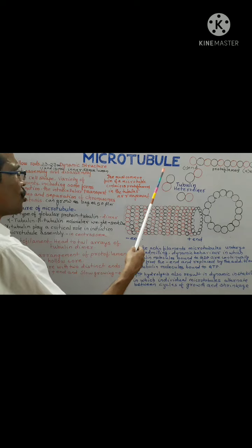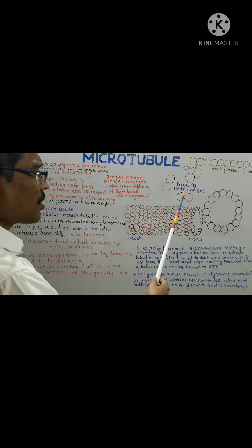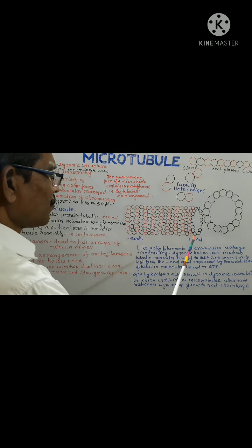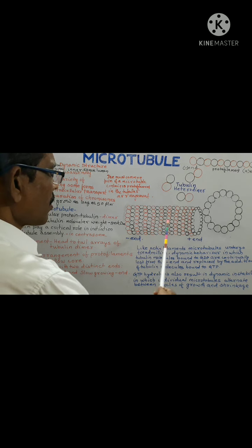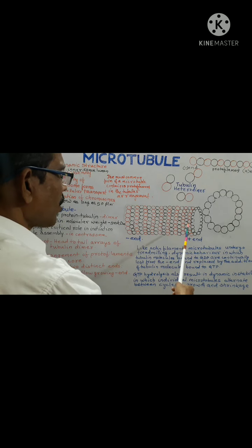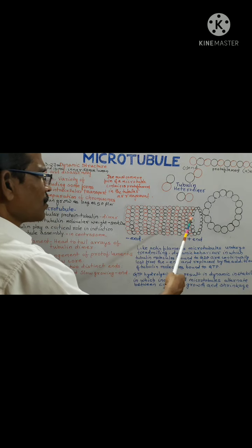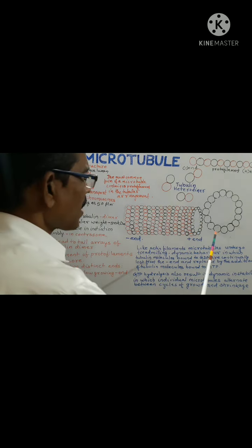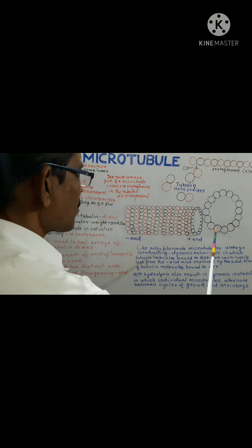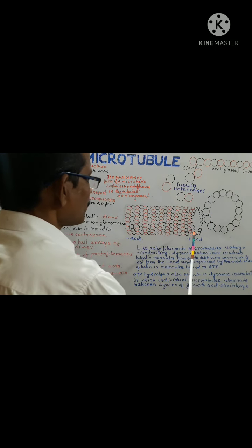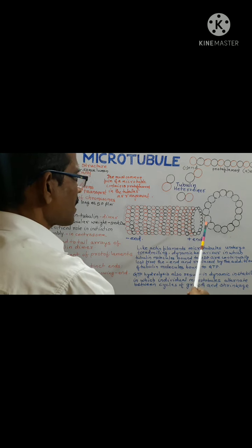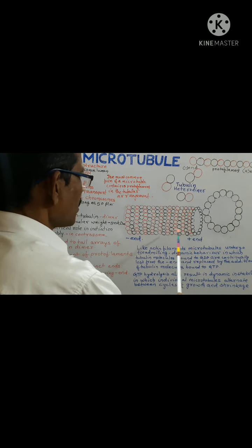Whether a microtubule grows or shrinks is determined by the rate of tubulin addition relative to the rate of GTP hydrolysis. If the rate of tubulin addition is greater than the rate of GTP hydrolysis, the microtubule will grow. If the rate of tubulin addition is less than the rate of GTP hydrolysis, the microtubule will shrink.